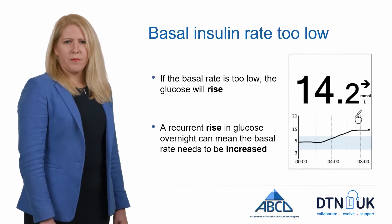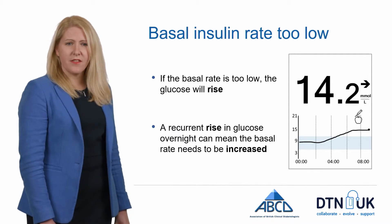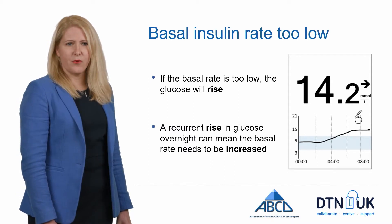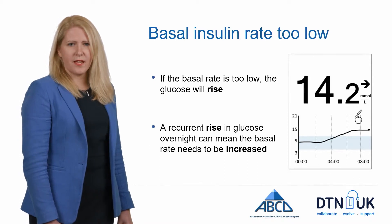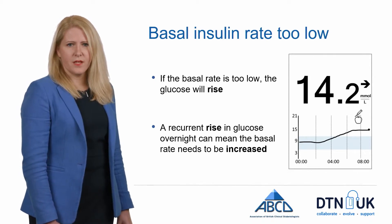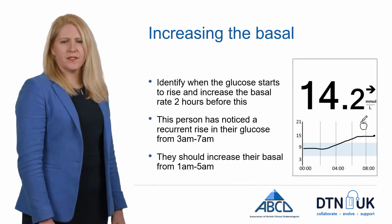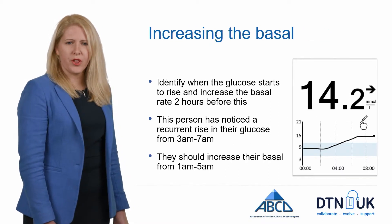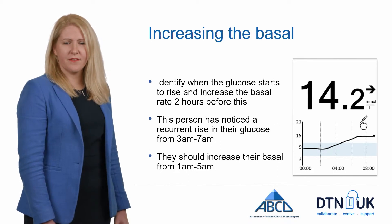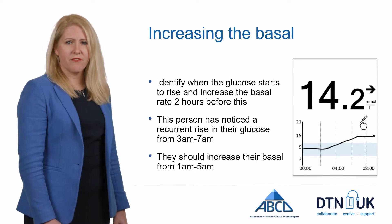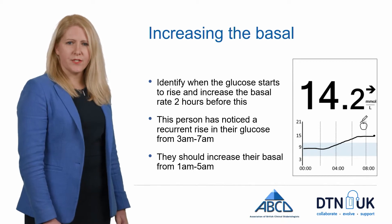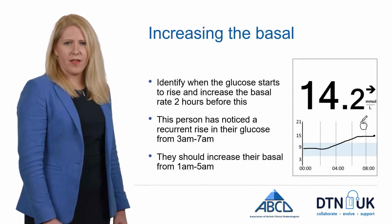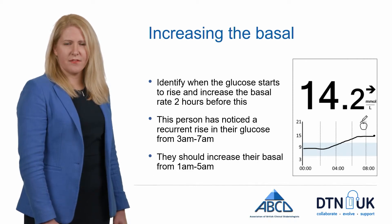Here is an example where the basal insulin rate is too low. You can see that there's a gradual rise in the glucose overnight, so your basal insulin needs to be increased during this time. In this example, the glucose has risen between 3am and 7am. Bearing in mind it takes a few hours for that change in basal rate to have effect, this person would want to go back two hours and increase their basal rate between 1am and 5am, then see whether that achieves a steady flat glucose overnight.